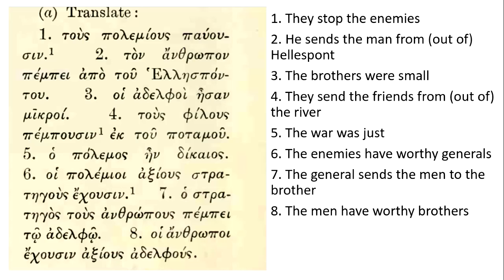The second sentence: 'ton anthropon pempe apo tu Hellespontu.' Here we have, once again, a lack of explicit subject, but we know it should be third person singular because the conjugated verb — which by the way is the first thing you should identify whenever translating — is 'pempe,' giving us a third person singular form in the present tense. The direct object is 'ton anthropon' because that's in the singular accusative case. And we have something in the genitive case, but this is not possessive genitive — rather it follows after the preposition 'apo' to indicate the place from out of which somebody was sent, nested within a prepositional phrase.